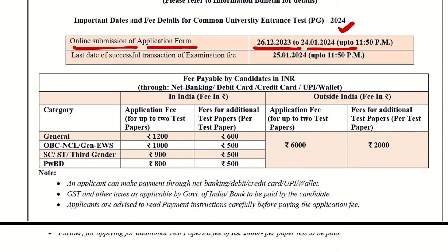For fees in the general category: if you have up to 2 papers in CUET PG, you pay a base fee. For additional test papers beyond 2, you have to pay ₹1200. Up to 2 papers you pay a certain amount, and ₹600 extra per additional paper applies as well — check the official breakdown.